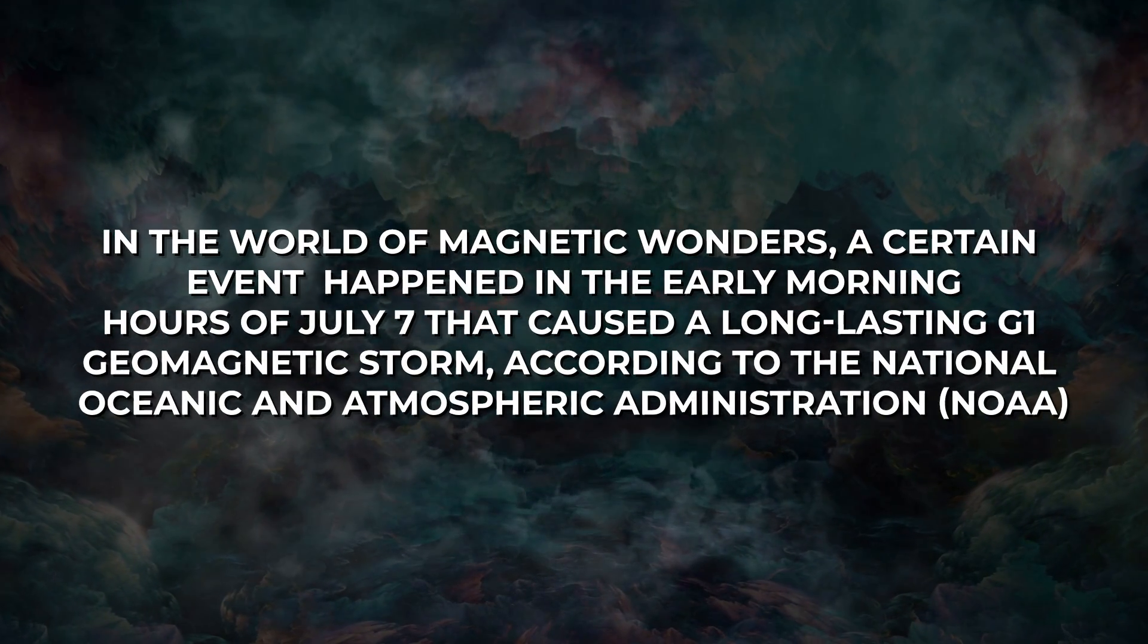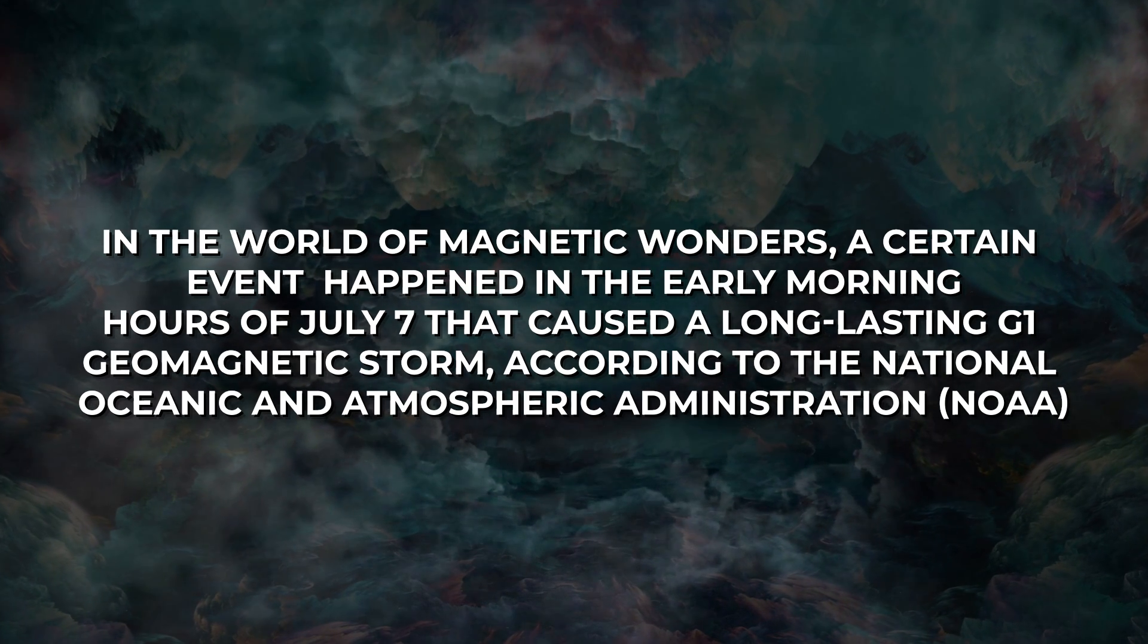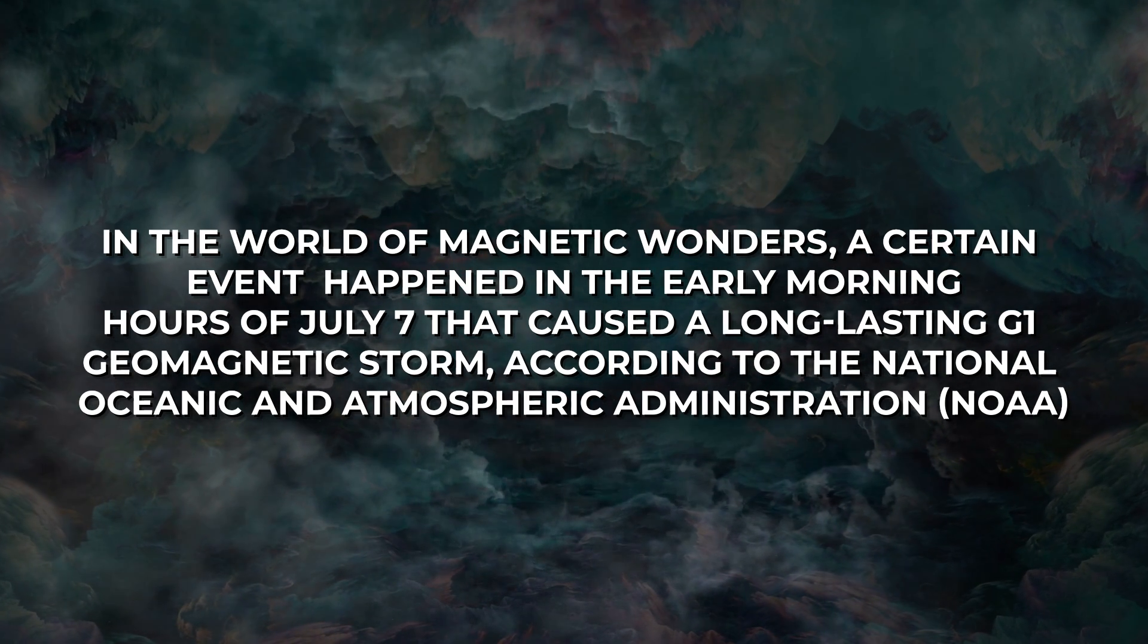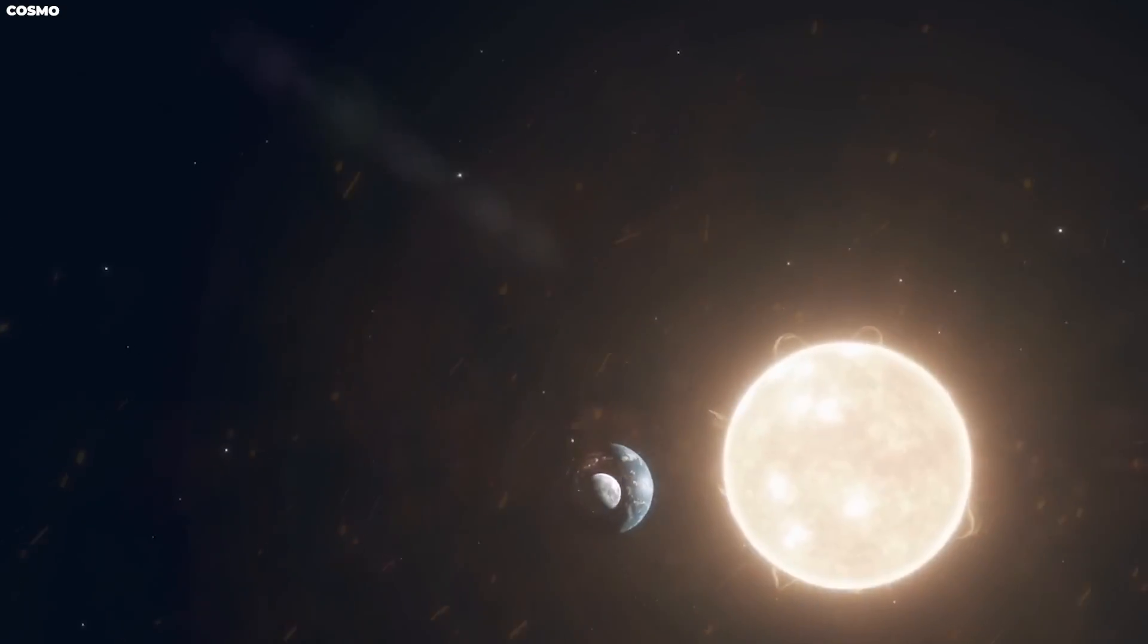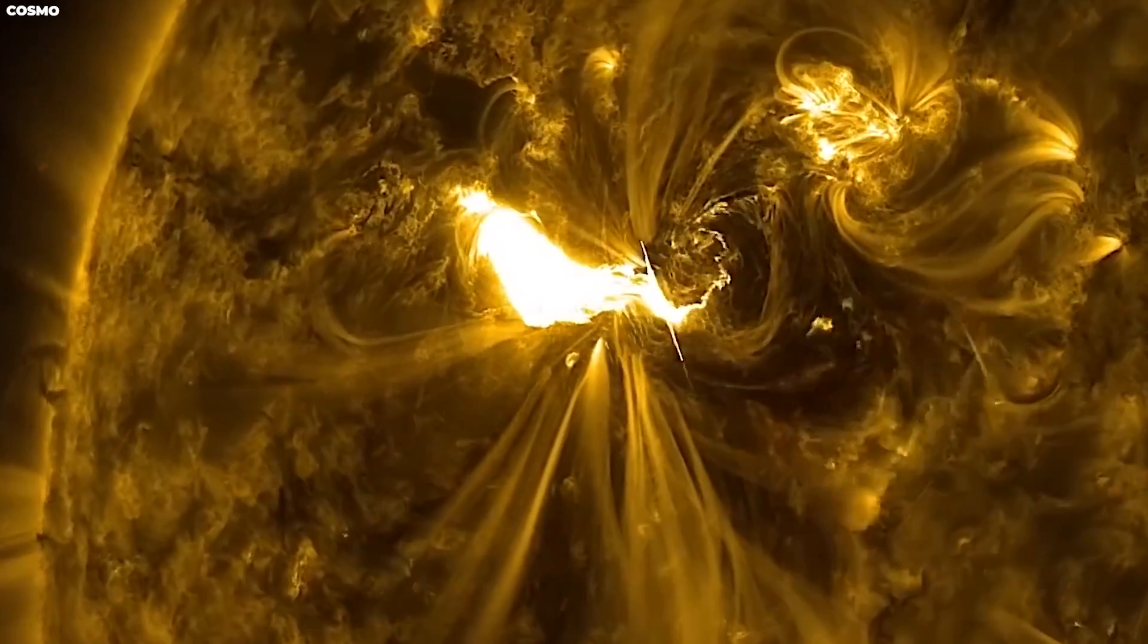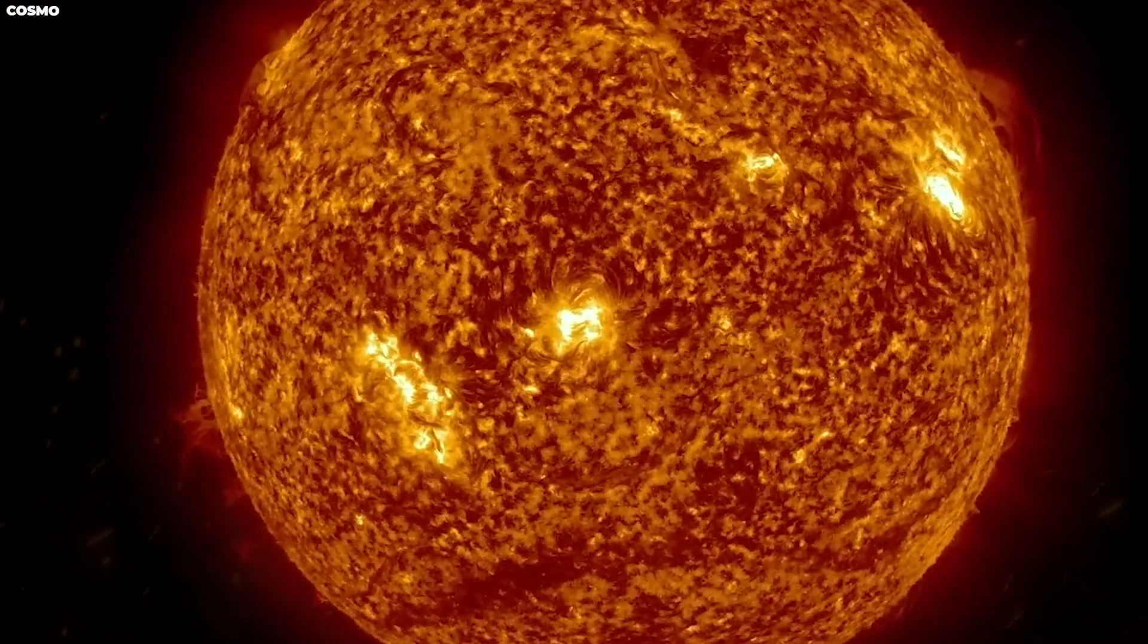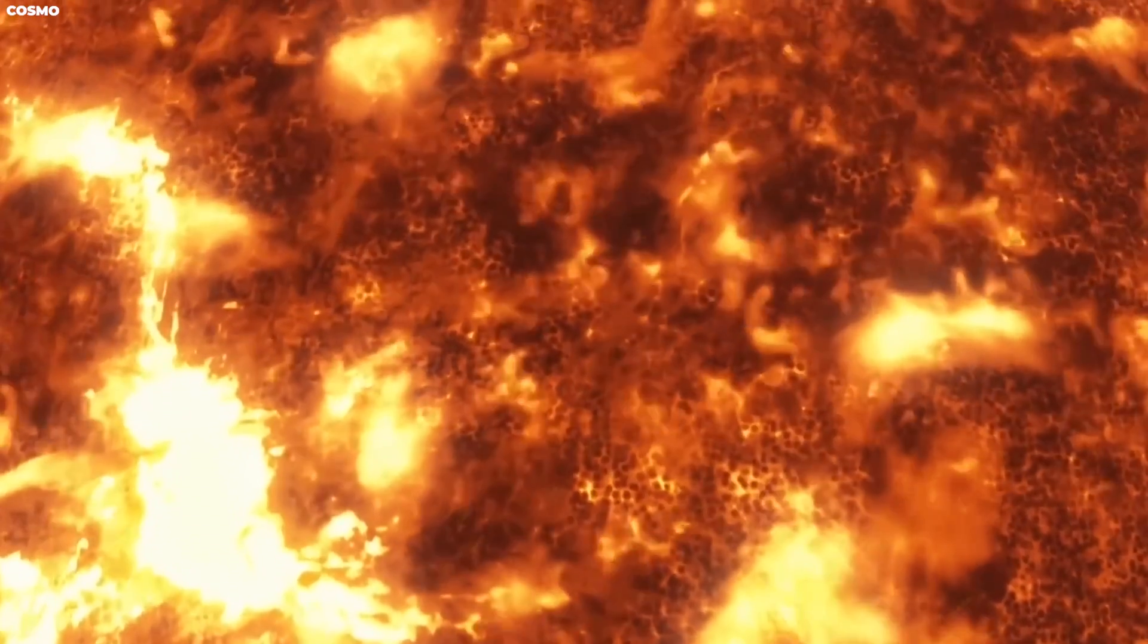In the world of magnetic wonders, a certain event happened in the early morning hours of July 7th that caused a long-lasting G1 geomagnetic storm, according to the National Oceanic and Atmospheric Administration. Deep in the solar wind, a complicated story was playing out. A coronal mass ejection was tucked in the flow just before the co-rotating interaction region. The question is whether or not we should worry about this crack.